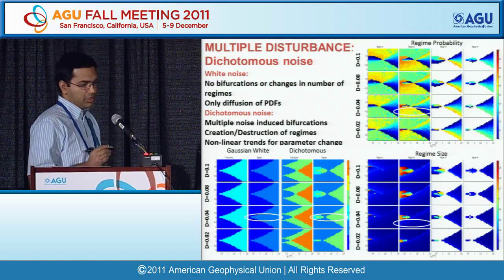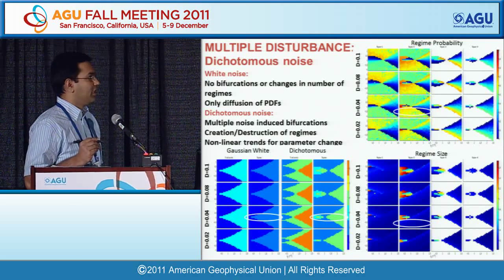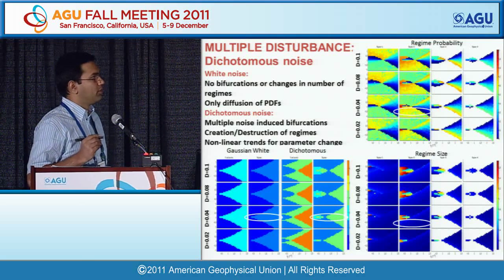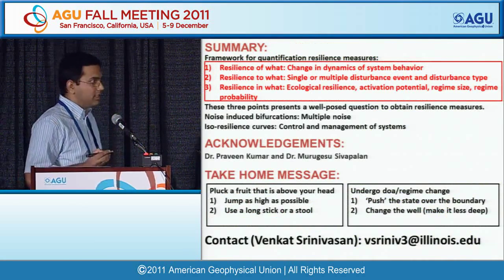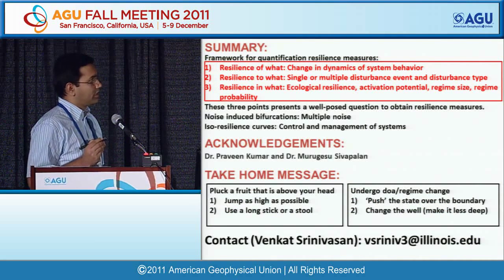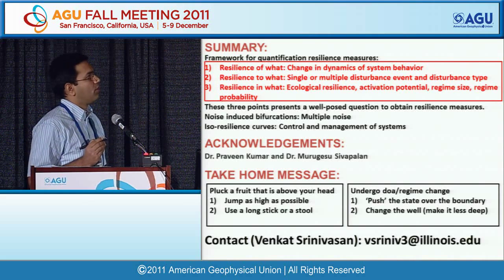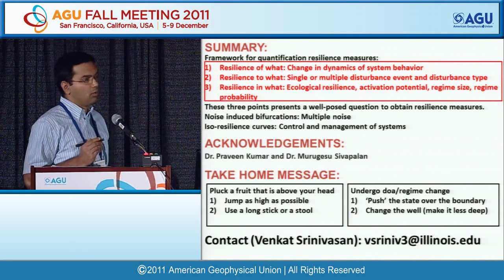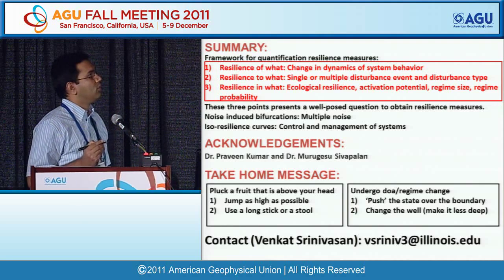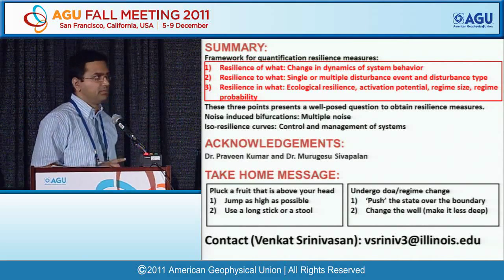Bifurcations occur in dichotomous noise but not in Gaussian white noise. In conclusion, we have three questions to establish a resilience framework: resilience of what — we are interested in change in dynamics; resilience to what — whether a single disturbance, multiple disturbance events, or what kind; and resilience in what aspect — whether ecological resilience, activation energy, regime probability, regime size, or similar measures.